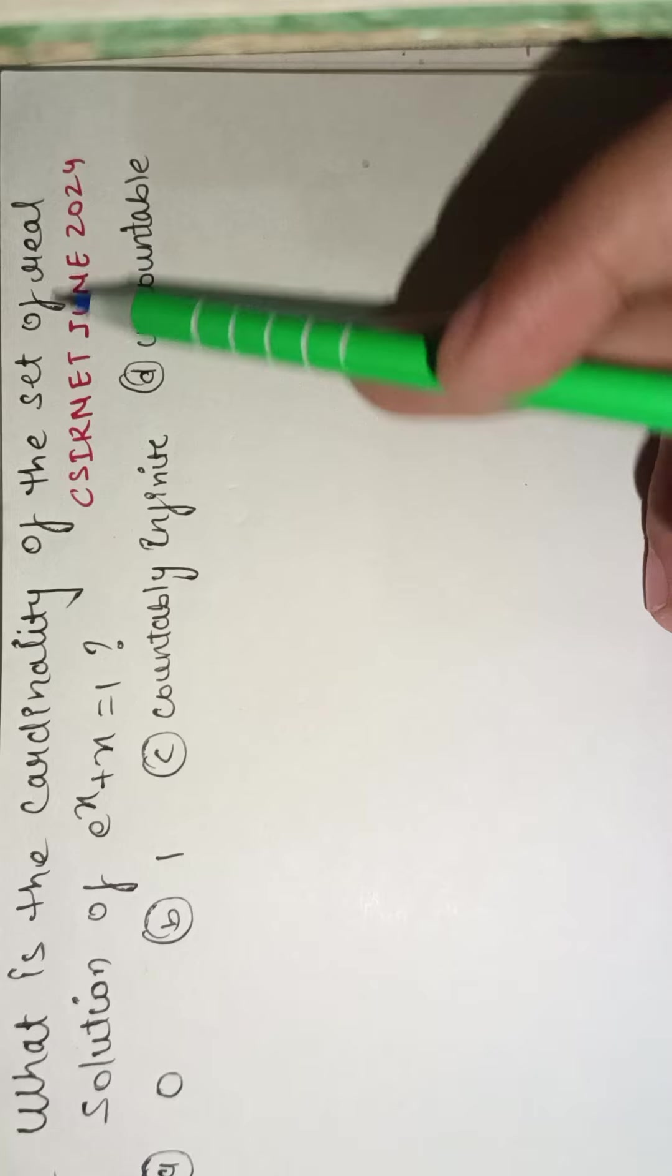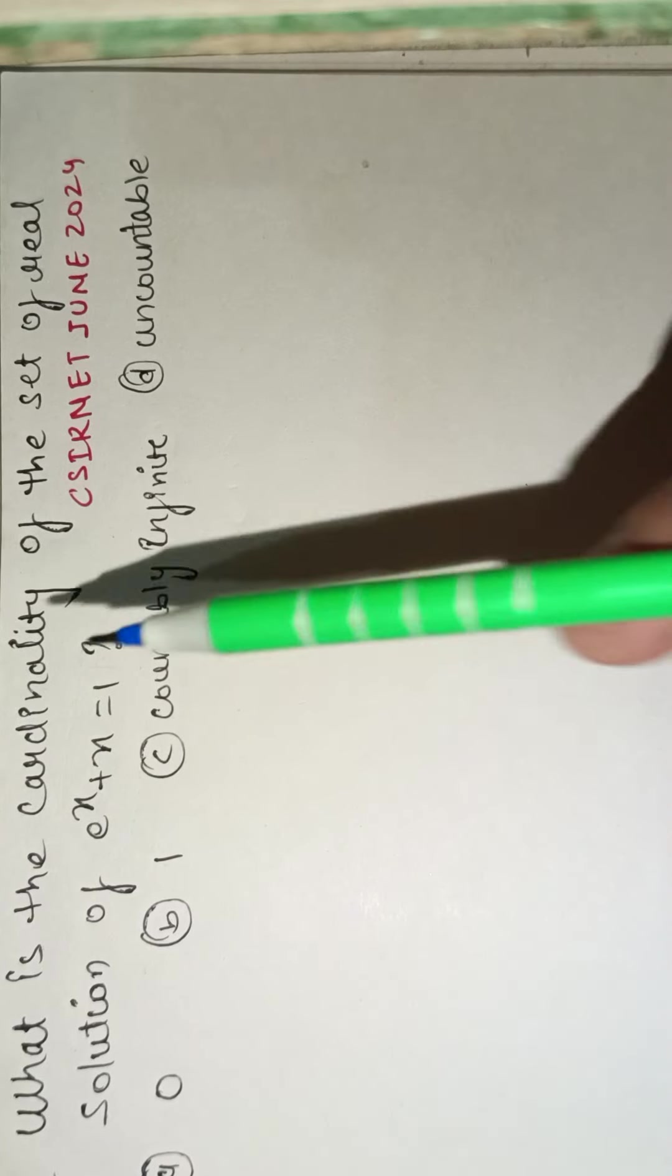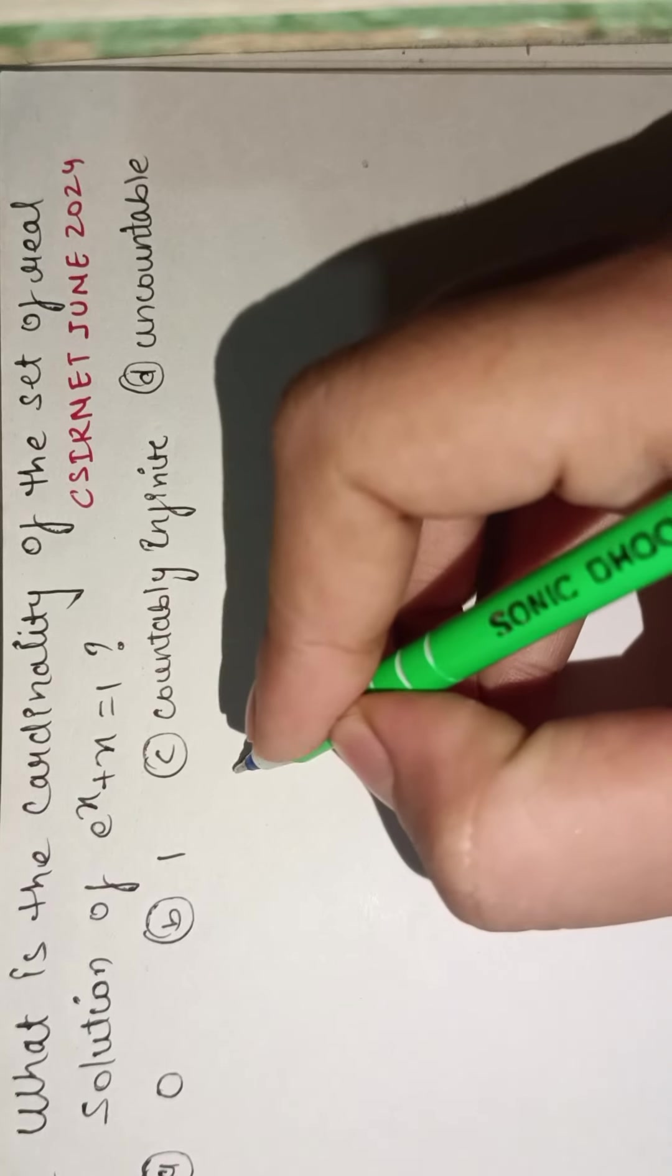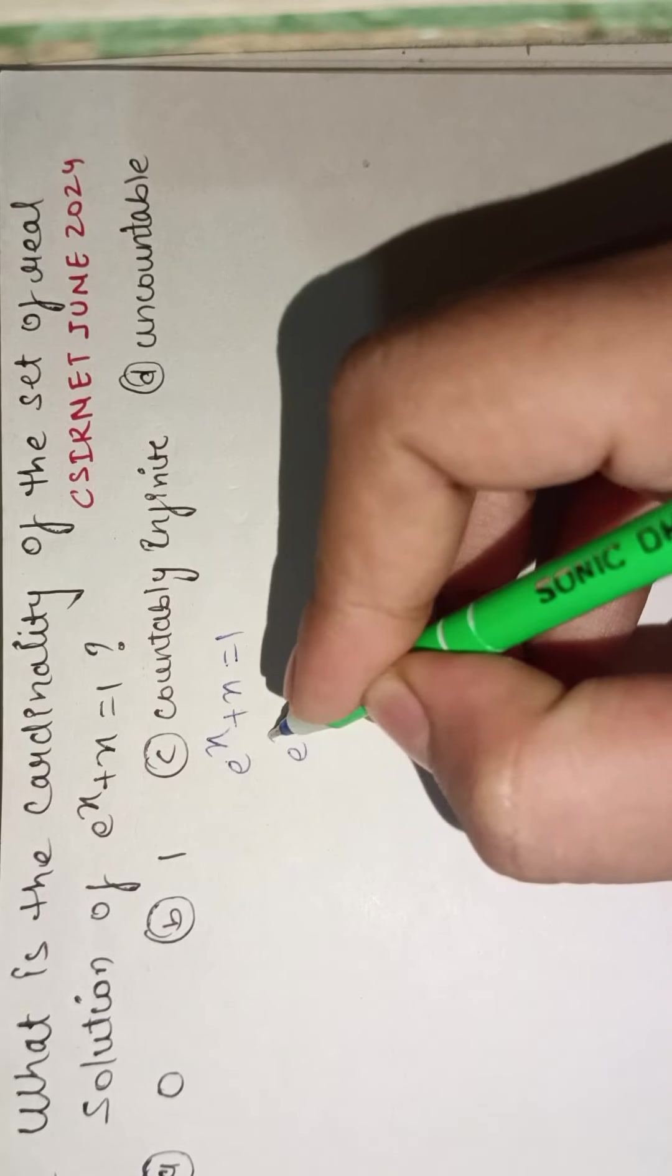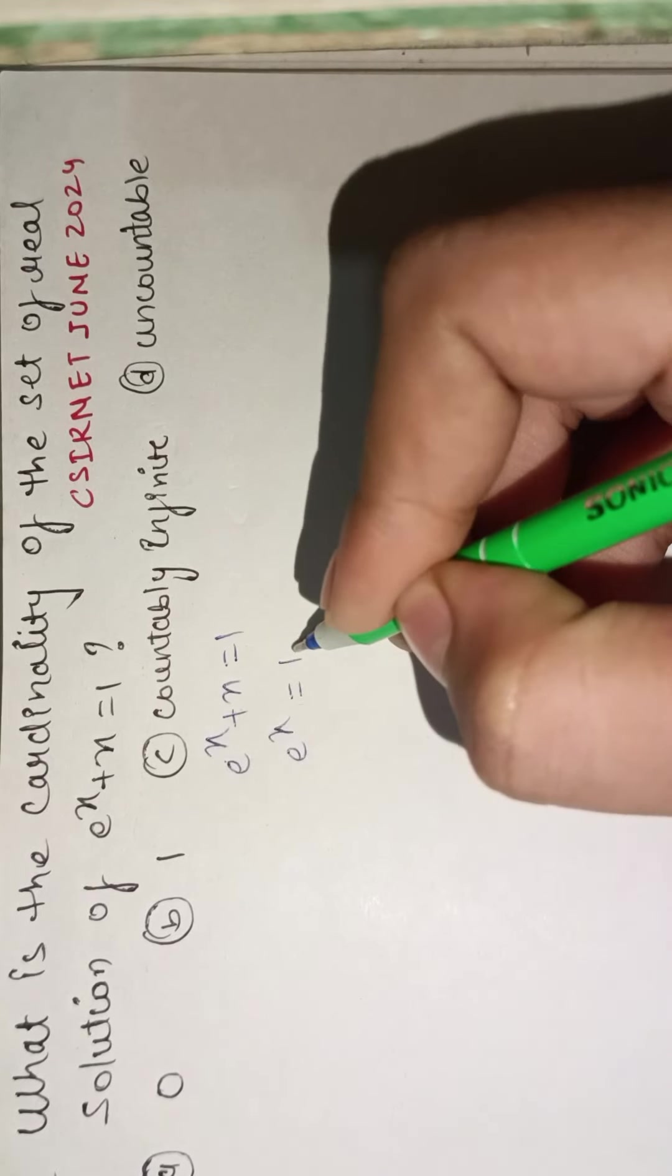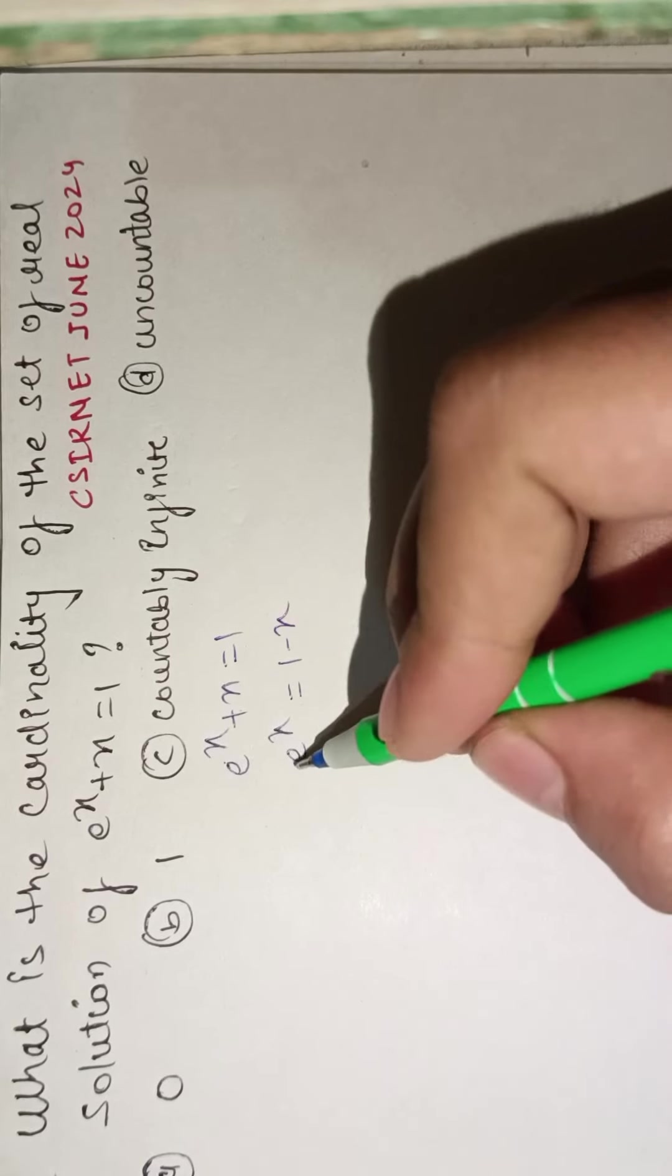We see that e^x + x = 1 is given. If we rearrange it as e^x = 1 - x, now we have to see for what value of x this condition is satisfied.